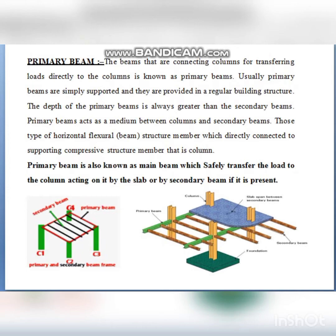Looking at the images of the primary beam: the beam connecting column C4 and column C3 is a primary beam. In the second image, the primary beam goes column to column directly. The secondary beam is in between. The primary beam safely transfers the load from the slab or secondary beam directly to the column.